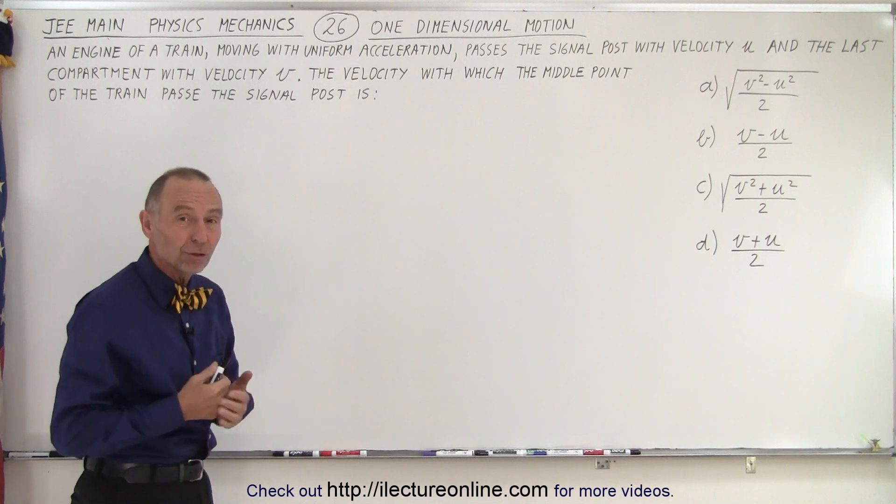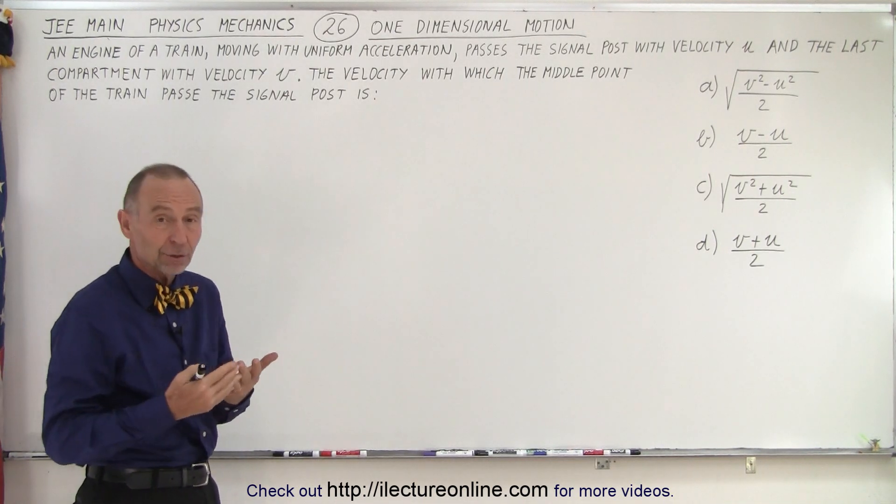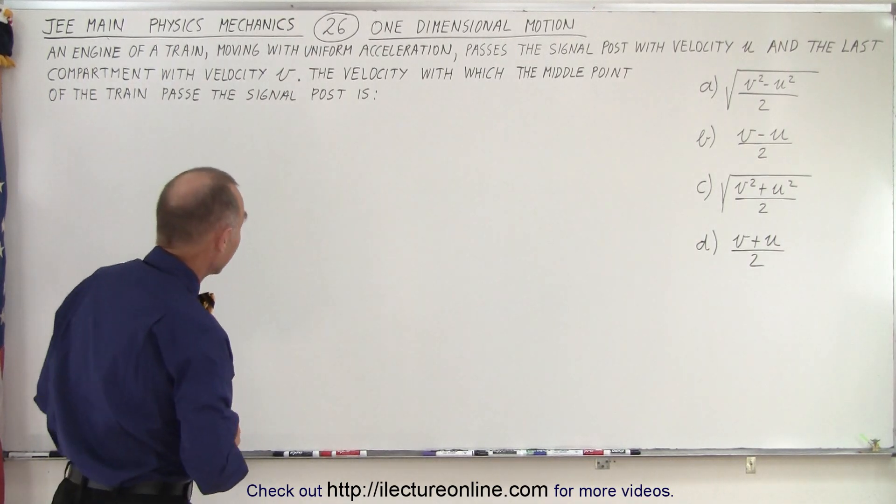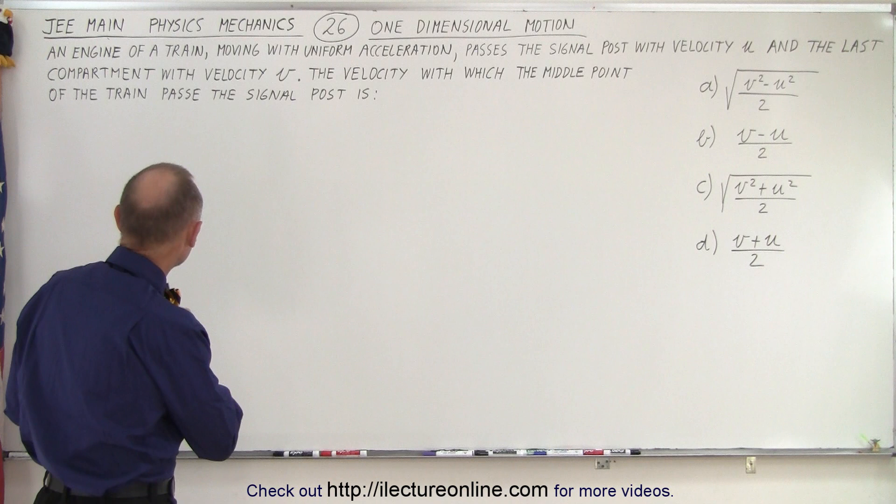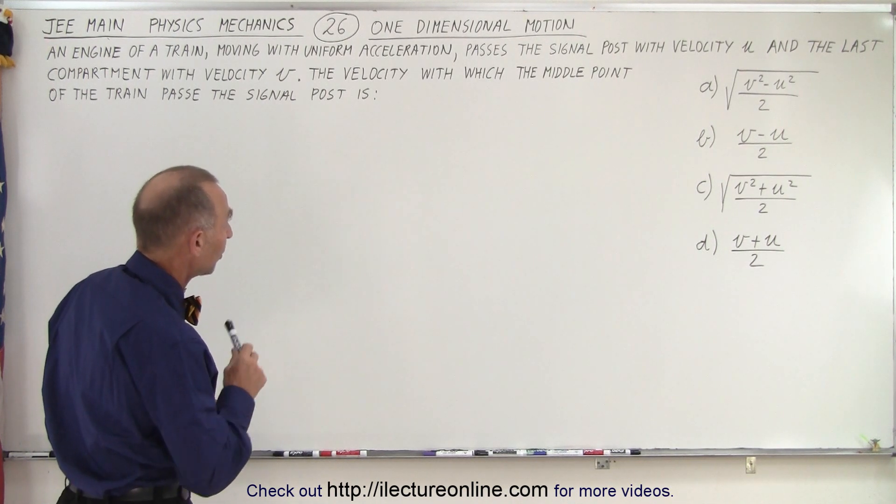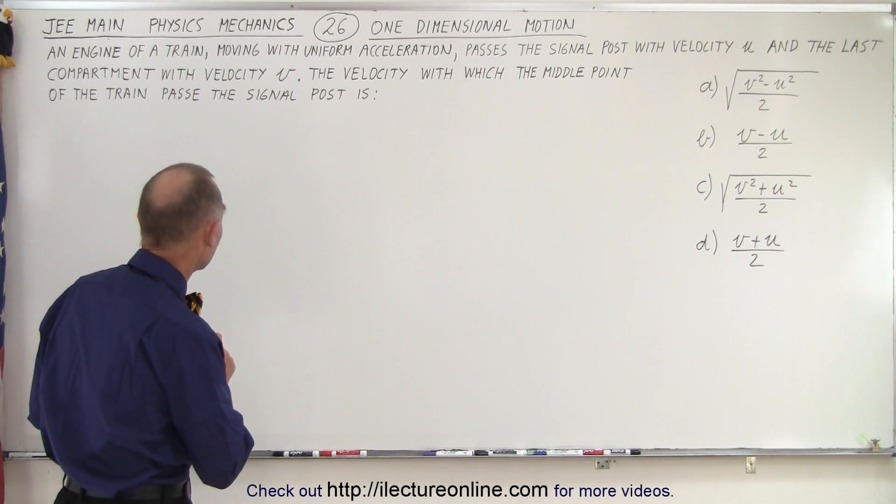It deals with one-dimensional motion, so that's one of the most principal concepts that you'll encounter in any physics books right at the beginning of the book. The problem says an engine of a train moving with uniform acceleration passes a signal post with velocity u and the last compartment with velocity v.